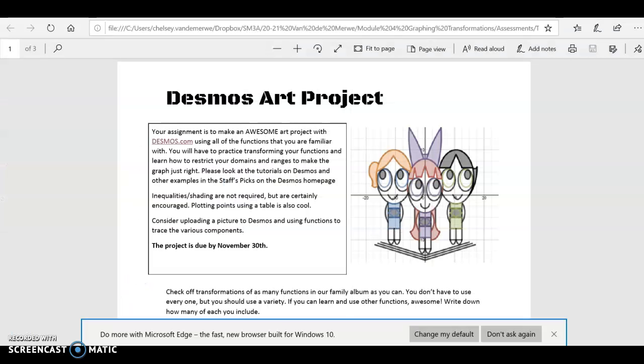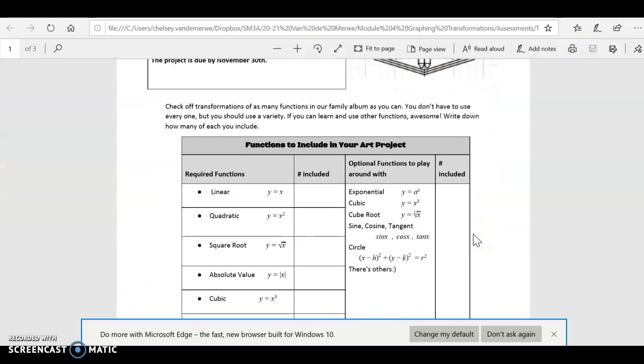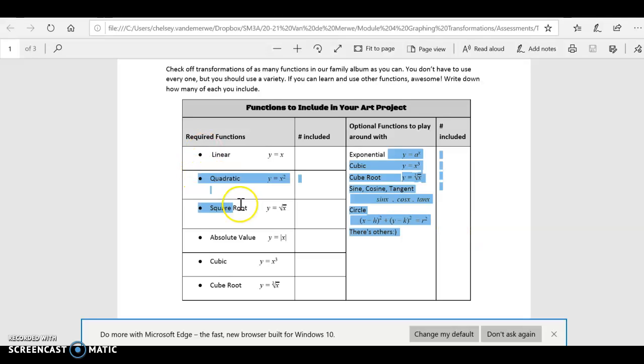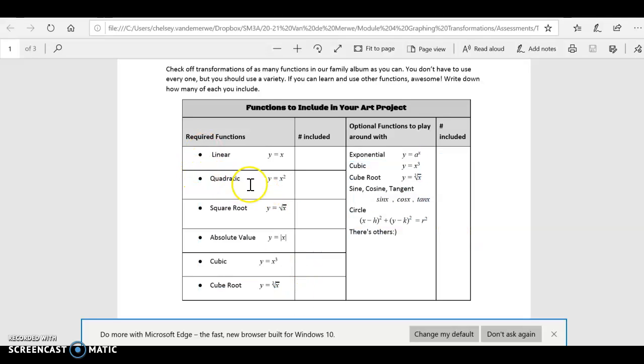So one of the requirements is that you have to use at least four of these functions right here. Linear, quadratic, square root, absolute value, cubic, or cube root. You can choose any four but you have to use at least four different ones.